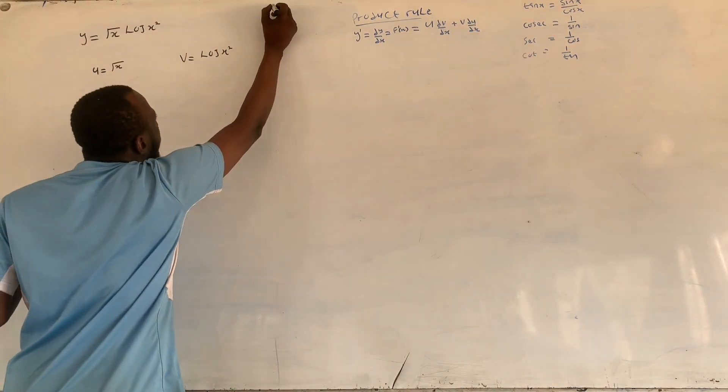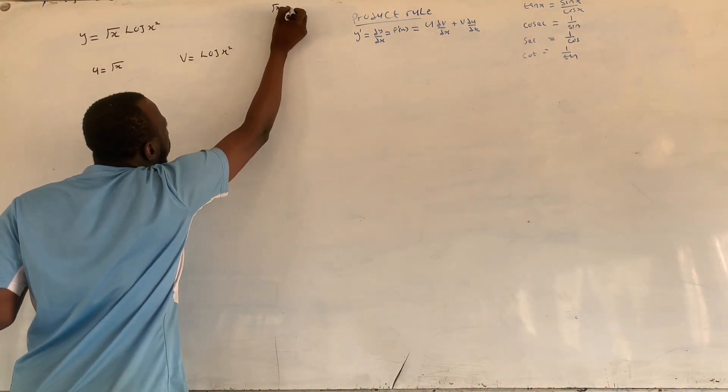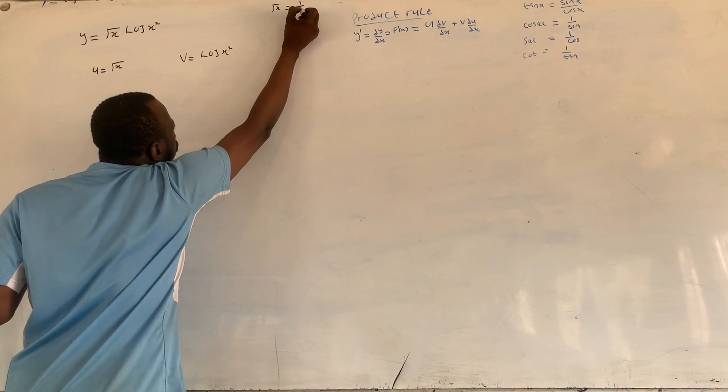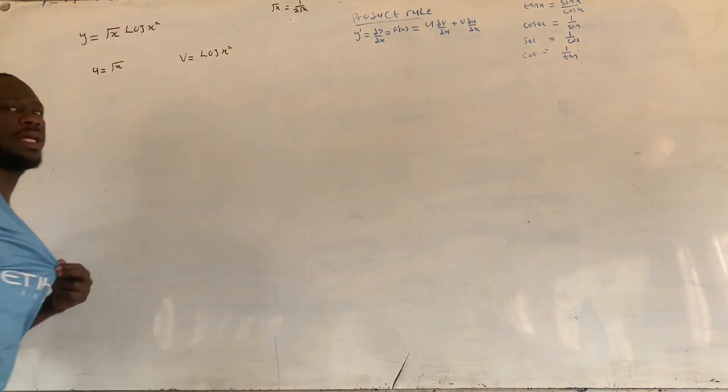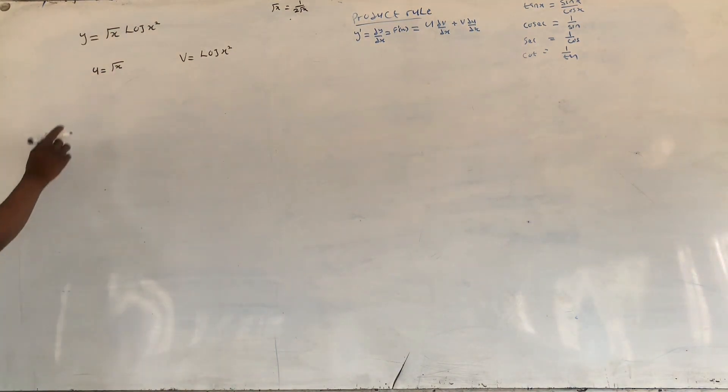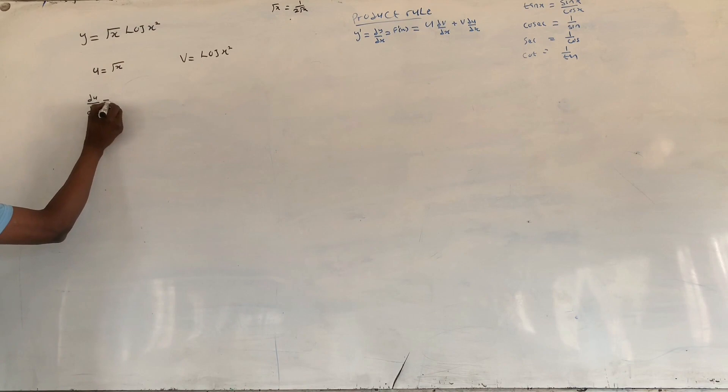We replace, don't forget this. But now we say here du over dx is equivalent to one over two root x in this case.